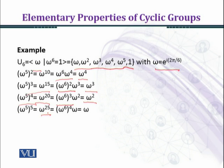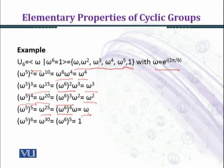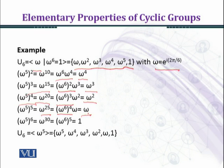Taking omega^5 to the fifth power gives omega^25, written as (omega^6)^4 times omega, giving omega. And omega^5 raised to the sixth power gives one. So we have the complete group U6 whose elements are one, omega, omega^2, omega^3, omega^4, omega^5. This means U6 is completely generated by omega and also by omega^5.